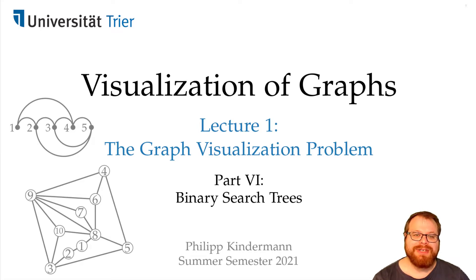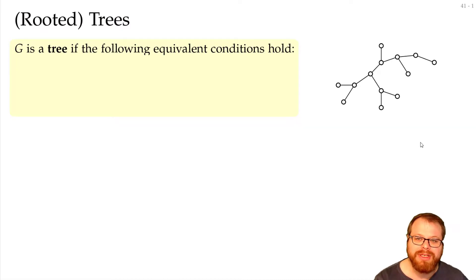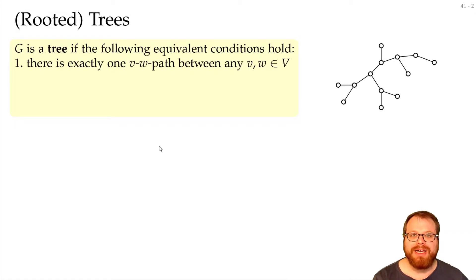In the final part of this lecture we want to have a look at our very first, very simple drawing algorithm, which is for binary search trees. So let's first define what binary search trees are. Probably you already know, but in general a tree is defined by some conditions. And we have four different definitions here that are all equivalent.